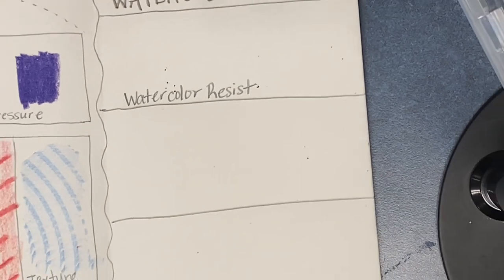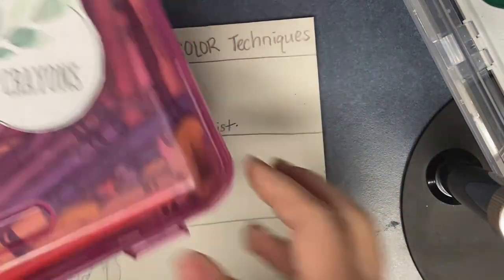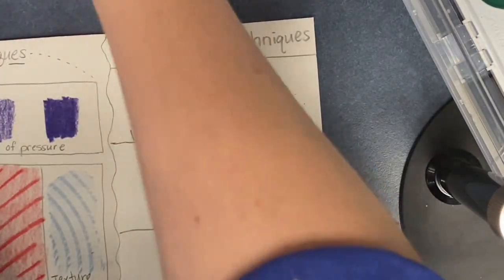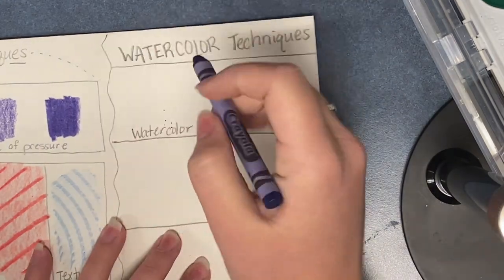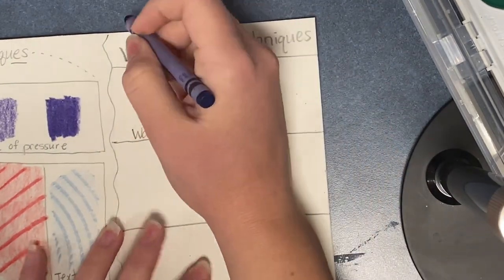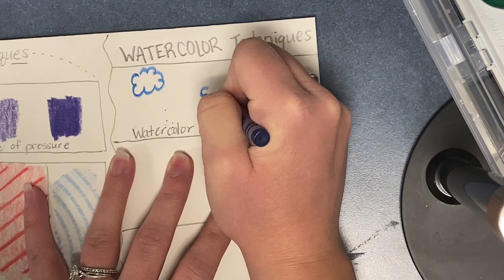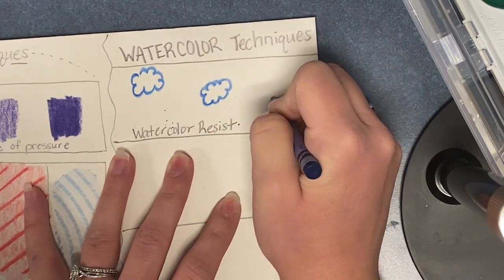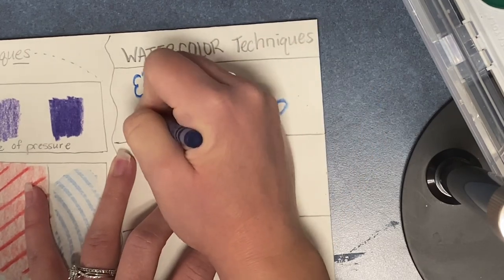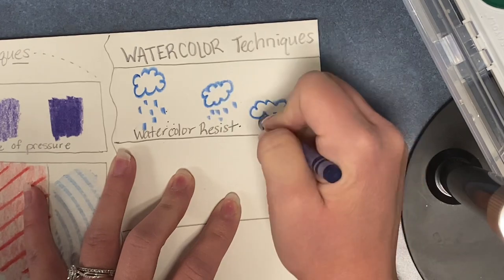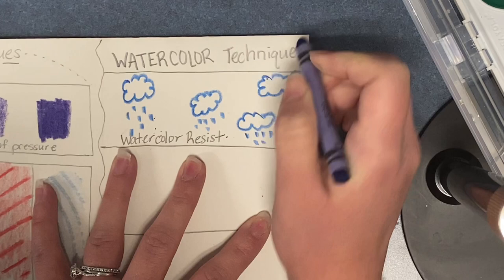Once you have that written, you can then pick any color crayon you would like. You can design this however you would like. I started to draw clouds that were raining because it's raining outside today. But if you just want to draw lines or swirls, that's completely up to you. Make sure you are working quickly because remember these Wednesdays we only have a short amount of time.